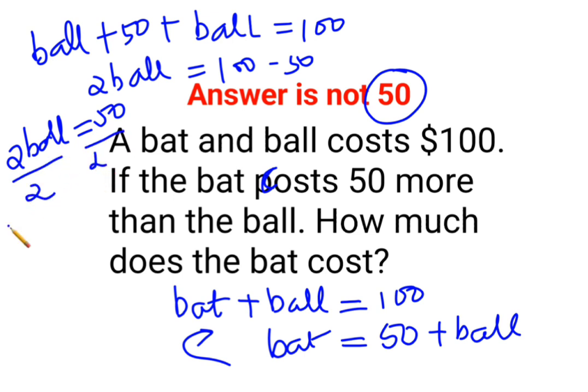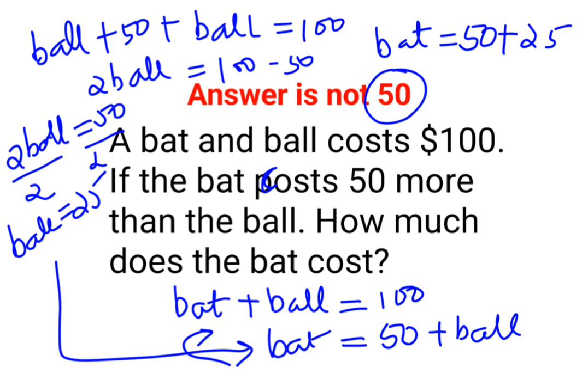Dividing both sides by 2, we can say the value of one ball equals 25. Let's put it over here. So the bat value is 50 plus 25. The answer for the question - the cost of the bat is basically $75.